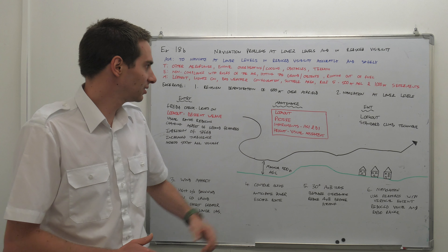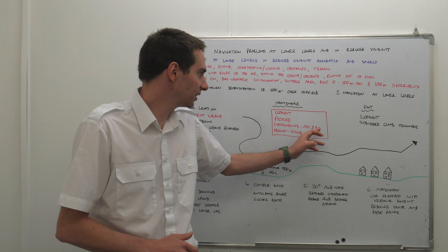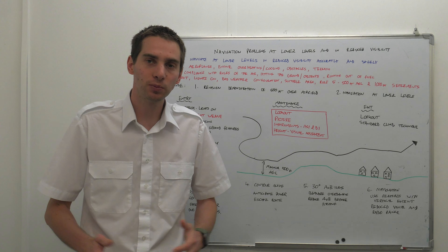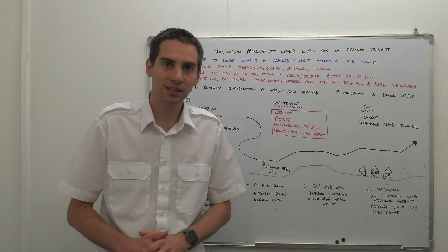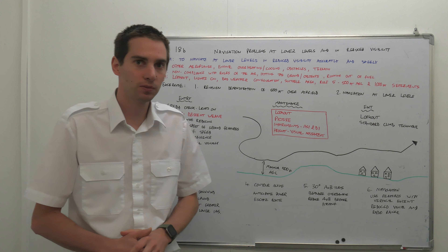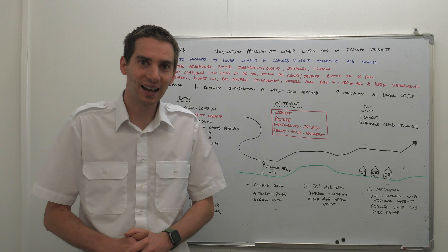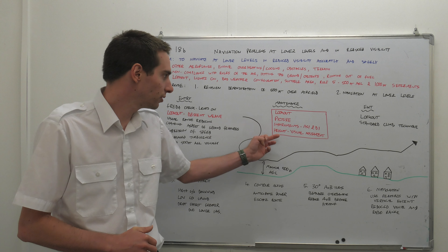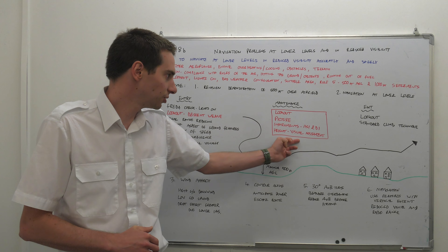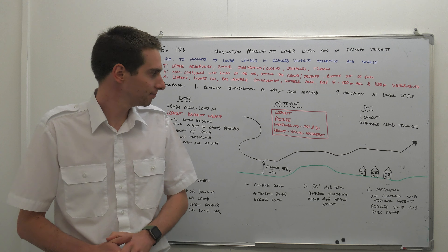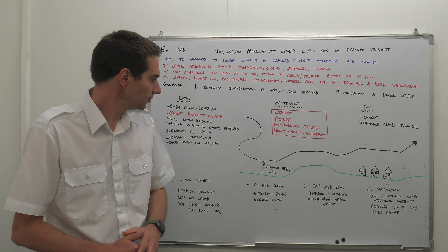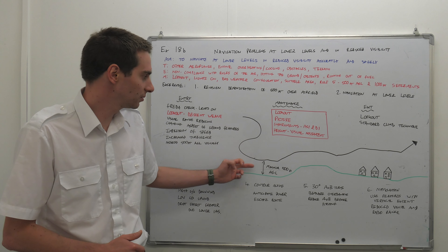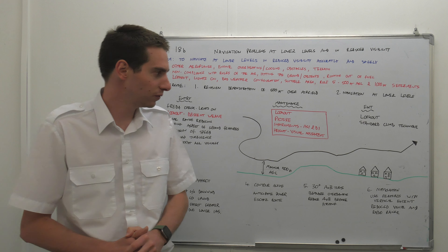For your instruments, go to the ASI and DI, but remember the altimeter is based on the QNH. The QNH may not be as accurate in the area you are, so really the height is just a visual assessment. Keeping at all times over the ground at 500ft.